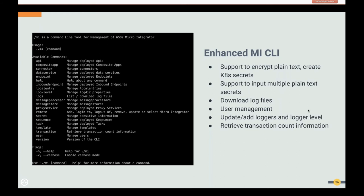For encryption, in earlier versions you had to encrypt plain text passwords one by one. Using the CLI, you can provide a properties file with all plain text passwords and encrypt them all at once. You can also do user management and manage logging via the CLI. Another exclusive CLI feature is retrieving transaction counts — users can retrieve the transaction count to get a rough idea of the number of transactions for a particular month, either as a report or a summary based on a selected time period.